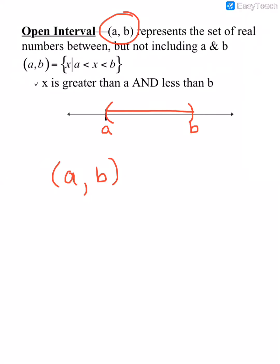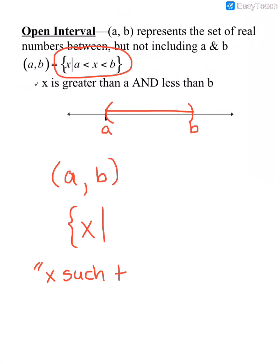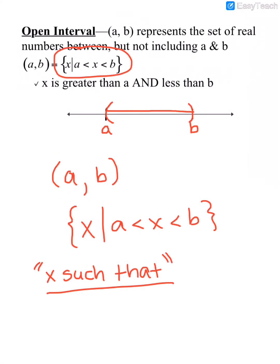Set builder notation always starts with a brace or squiggly bracket, an X, and then a bar. The way we read this notation is 'X such that.' So this is X such that A is less than X, which is less than B. Then we close it with a squiggly bracket. This squiggly bracket, X such that, and the closing squiggly bracket always stay the same; the part inside changes depending on what our interval is.